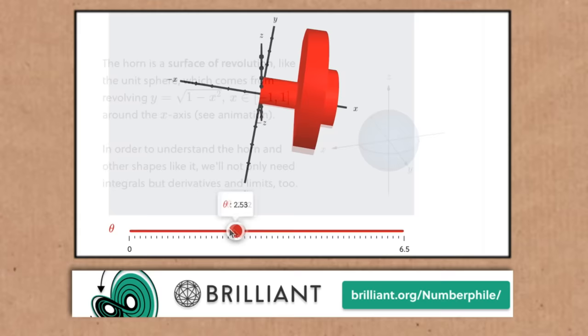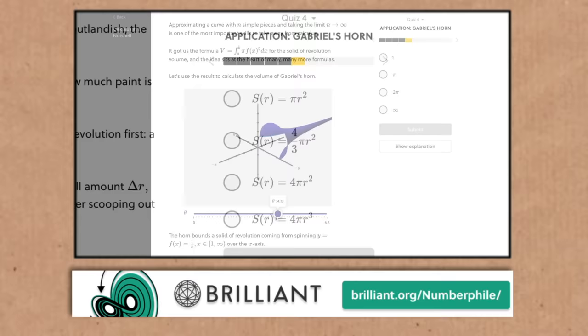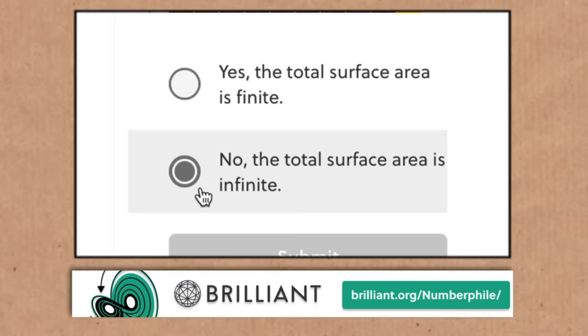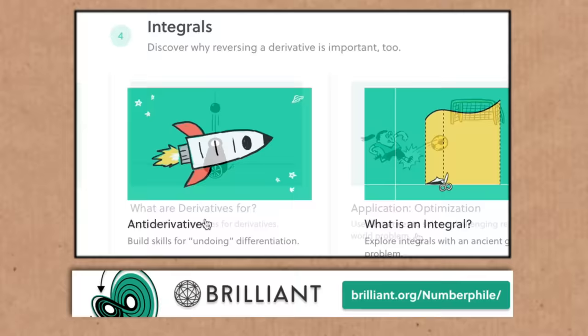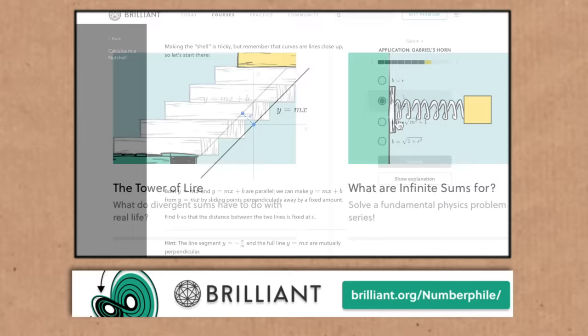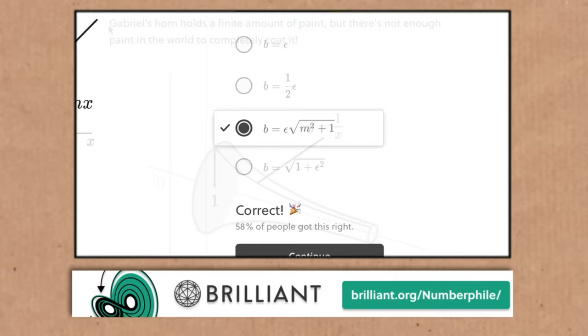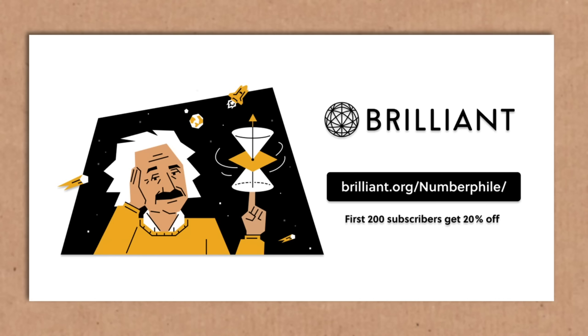You can take a fantastic interactive quiz about Gabriel's Horn on Brilliant, today's sponsor. It's part of Brilliant's Calculus in a Nutshell — one of many courses covering all the classics, superbly designed. Go to brilliant.org/numberphile for 20% off a premium subscription.